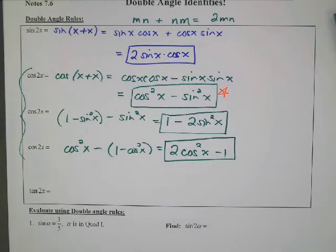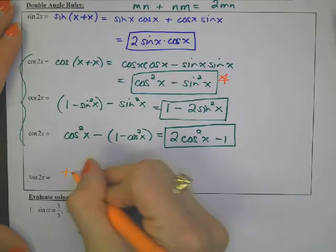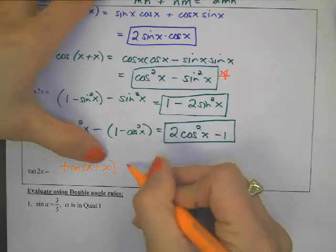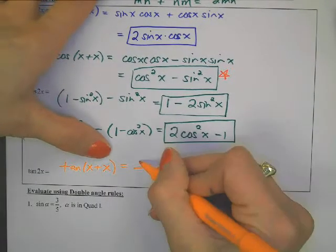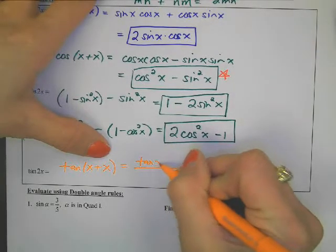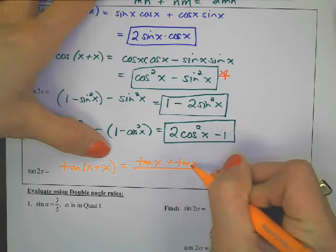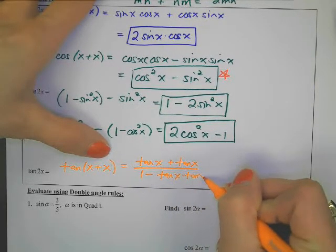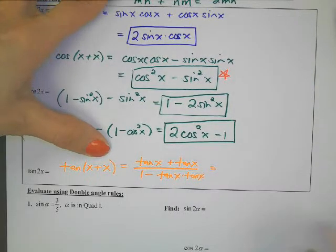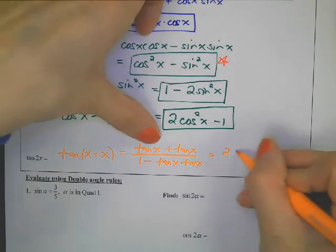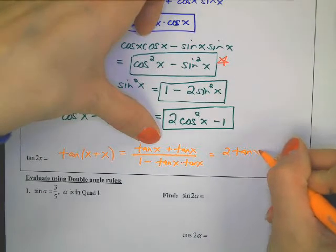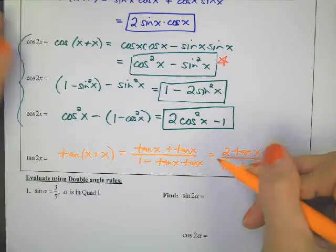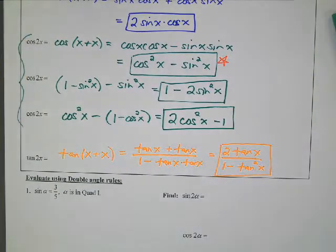The last identity here is tangent of 2x. Let's do tangent of x plus x. If you have a cool song for that, you can sing it. But it's got that huge fraction. It goes tangent of x plus tangent of x divided by 1 minus tangent of x times tangent of x. The numerator is going to be 2 times tangent of x divided by 1 minus tangent squared of x. And there is the double angle formula for tangent.